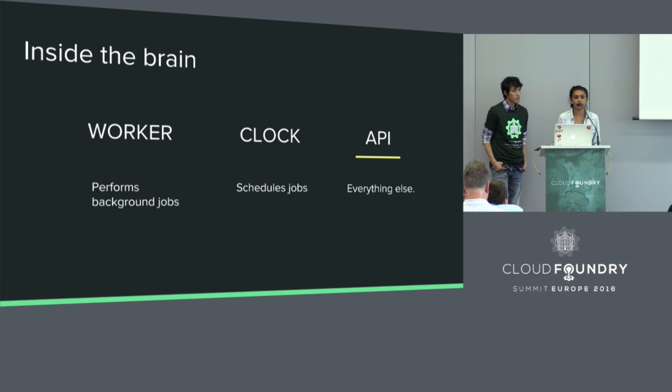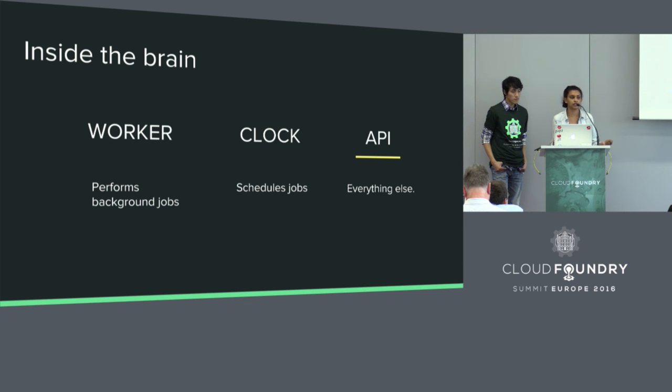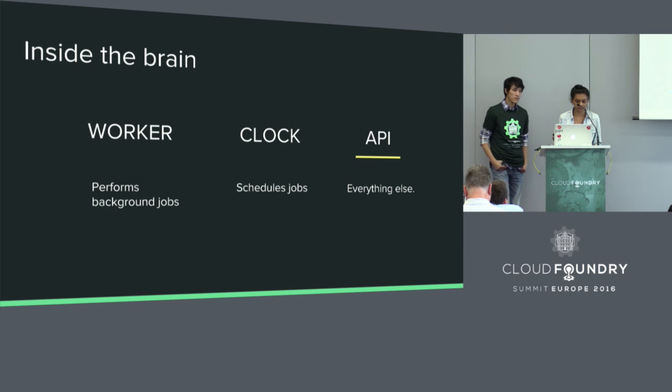The clock simply schedules some of these jobs and does daily app cleanup and expired droplets, things of that nature. And the API is literally everything else — this is where all of the complex logic inside of CC lives. When we're talking about CC responding back with helpful information, this is the thing that's going out and talking to the external components inside of the Cloud Foundry deployment to get you back the information that you need.